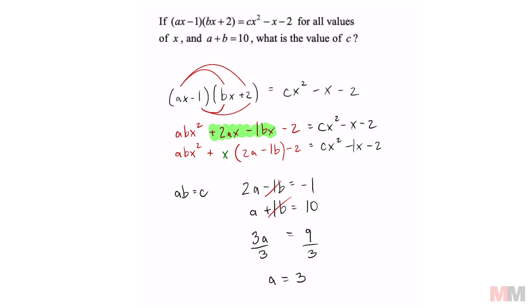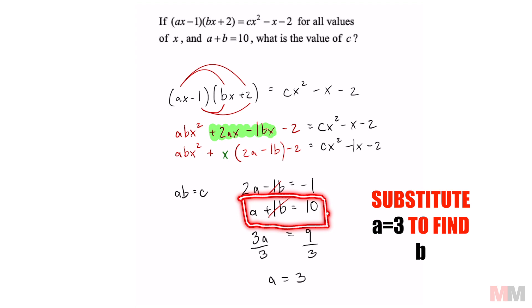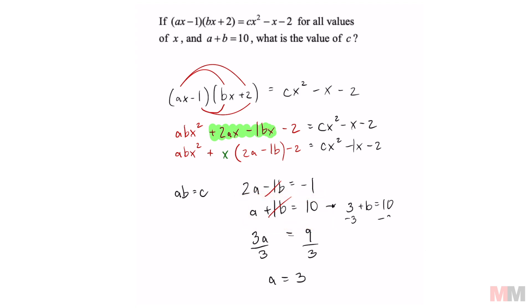Almost done. Now that you know that a is 3, we can use that given information once again. Plug in a and you'll get b equals 7. That's all we need to answer this question because now we can use this statement to find the value of c. A is 3, b is 7, 3 times 7 equals 21.